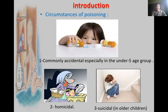The first topic is poisoning. Poisoning commonly means accidental ingestion, inhalation, or any method by which a poison enters the body — especially in children under 5 years of age. The circumstances of poisoning are commonly accidental, especially in the under-5 age group. The second circumstance is homicidal, and the third is suicidal, seen in older children.